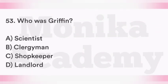Question 53: Who was Griffin? Option A: Scientist. Option B: Clergyman. Option C: Shopkeeper. Option D: Landlord. The correct answer is Option A, scientist — Griffin एक scientist था.